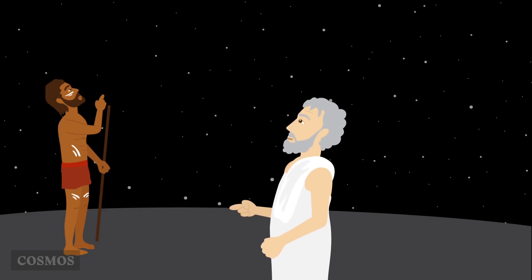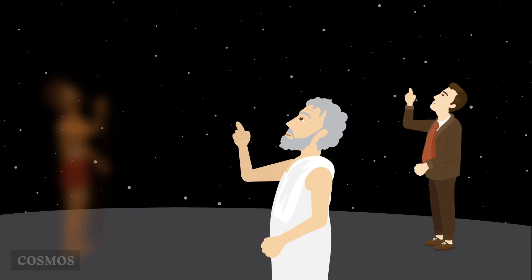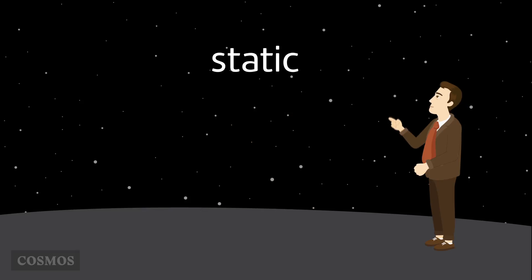Apart from the odd comet and a very occasional supernova, the heavens don't seem to change much. This was the general observation of humans throughout history, and even at the start of the 20th century it was still assumed that the universe is essentially static.